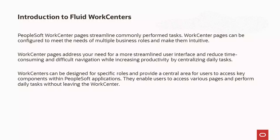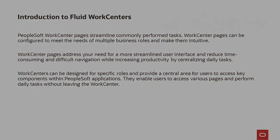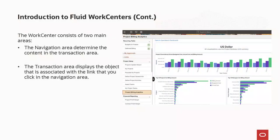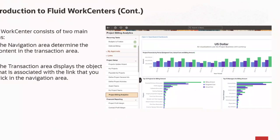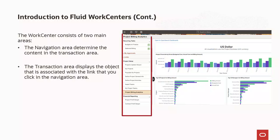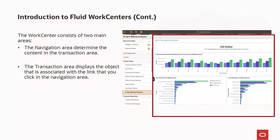Work Centers enable users to access various pages and perform daily tasks without leaving the Work Center. The Work Center consists of two main areas: the navigation area and the transaction area. When you click a link in the navigation area, it triggers the appropriate transaction and passes values from the navigation area so that the application can display the appropriate content in the transaction area or in a new browser window.